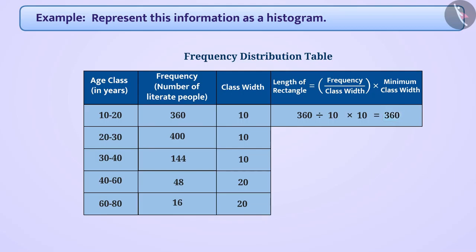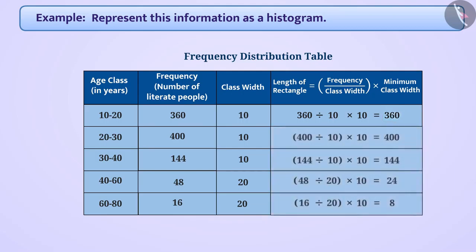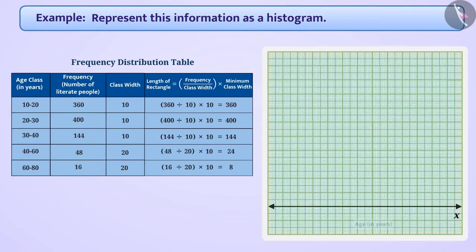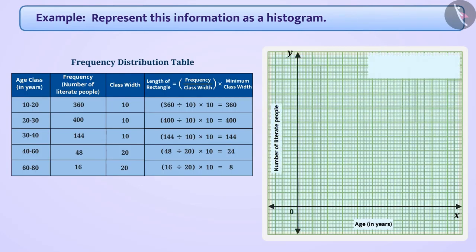Similarly, we will find the length of rectangles for all age groups. Now we will show the age groups on the x-axis and the number of literate people on the y-axis. For this, we will take one unit equal to 10 years on the x-axis and one unit equal to 40 persons on the y-axis.